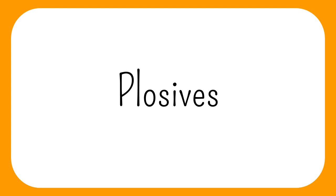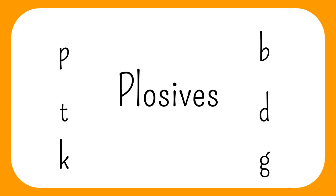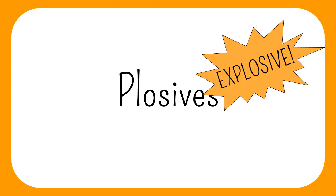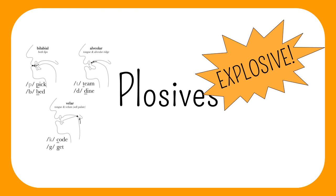Welcome to a series all about the physical sounds that we have in English. Today we're going to learn about the plosives — P and B, T and D, and K and G. Plosives are explosive sounds, so-called because they're produced through a rapid release of air past a point of complete closure in the mouth. There are six plosive sounds in the English language.